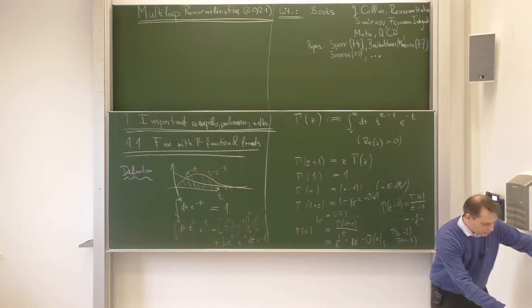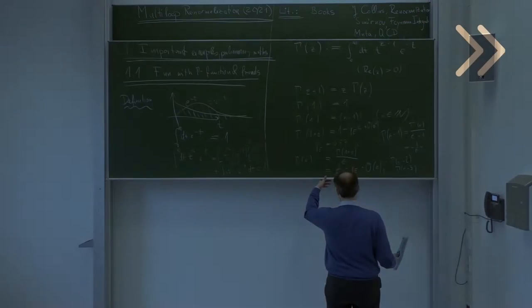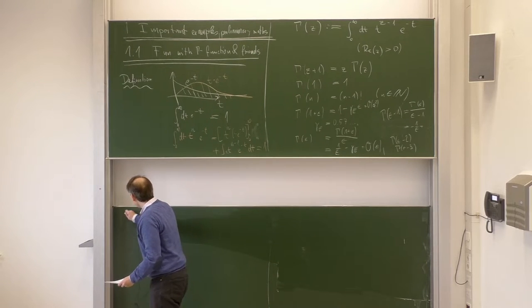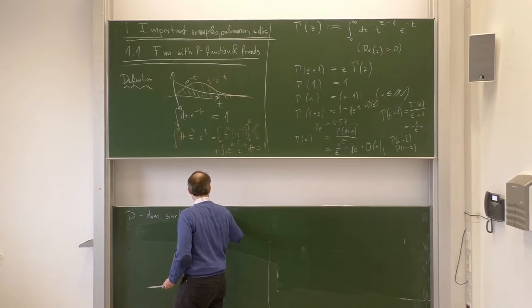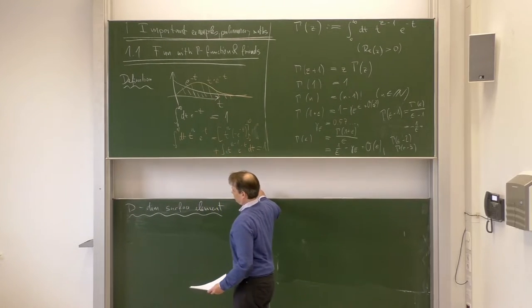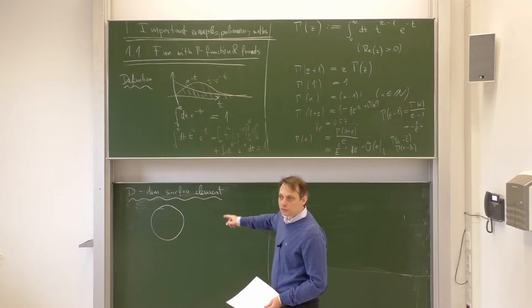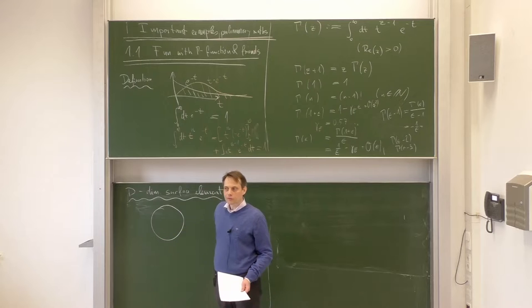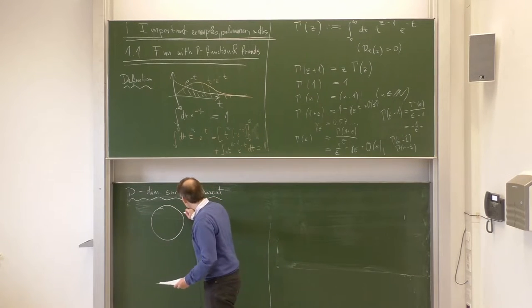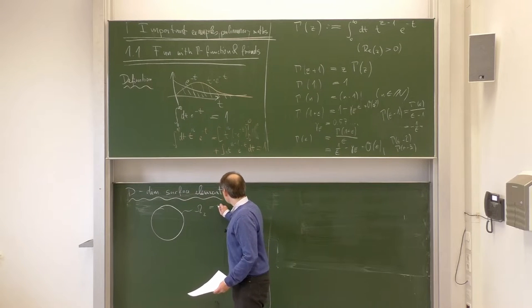So much to the gamma function, which is an important ingredient in doing dimensional calculations. Let us now look at a d-dimensional surface element. This is a circle — a two-dimensional sphere. What is the surface of this two-dimensional sphere, i.e., the circumference of the circle with unit radius? It is 2 pi. So let's call the surface element in two dimensions omega_2, and the surface element of the circle is 2 pi.